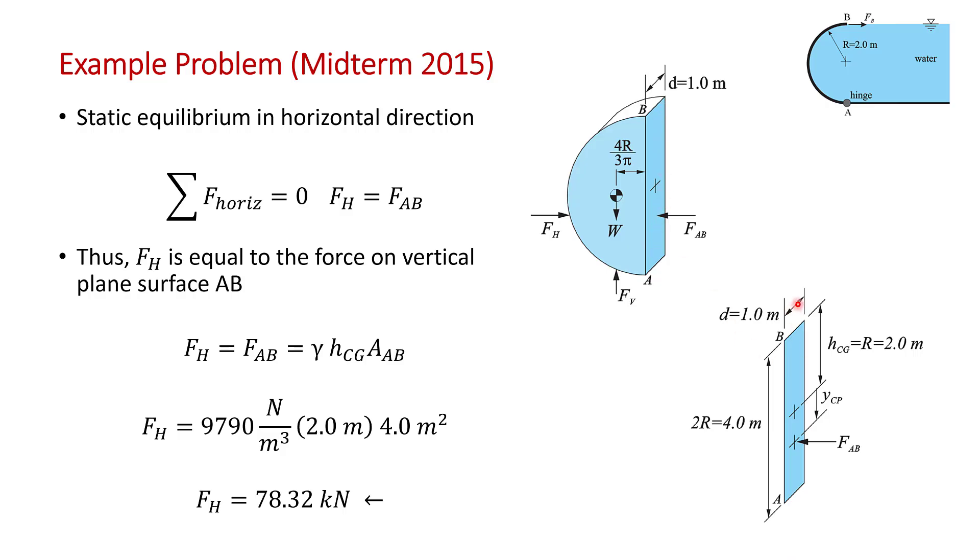I've drawn this surface AB here and I've put the dimensions on. That's one meter depth. And the total height of the surface is going to be two radiuses, which is four meters. And I've shown the center of area. The center of gravity here is going to be at one R. So two meters and the force FAB acts as we learned in the previous video below the center of area. The center of pressure is always below the center of area.